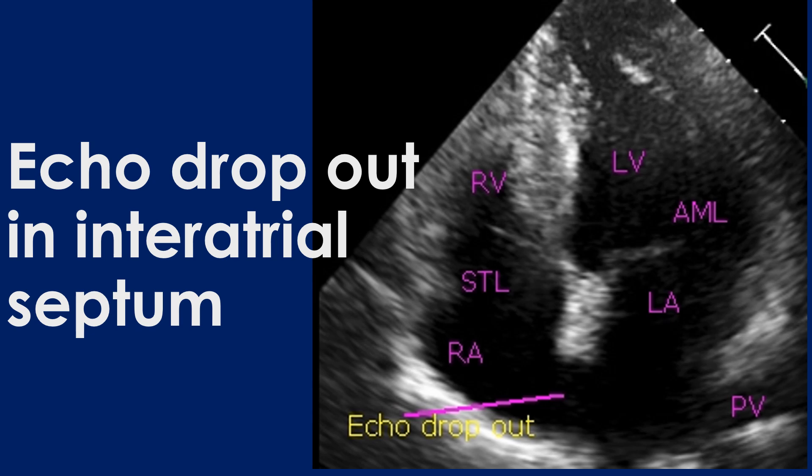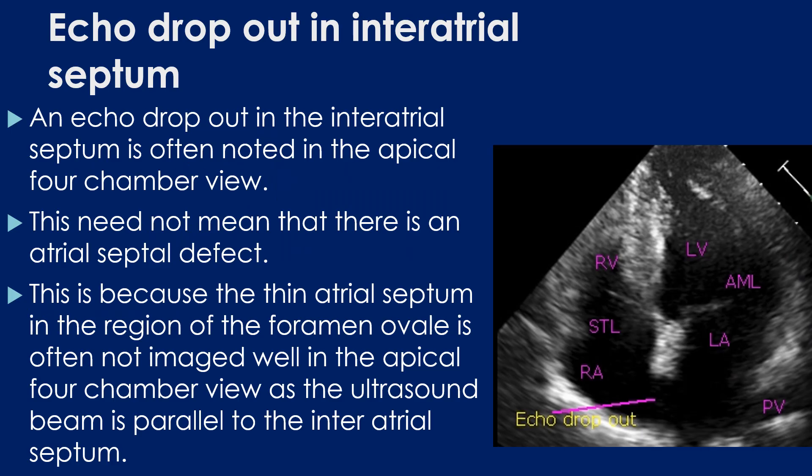Echo dropouts in the intra-atrial septum is an often noted finding in echocardiogram reports. An echo dropout in the intra-atrial septum is often noted in the apical 4-chamber view. This need not mean that there is an atrial septal defect.